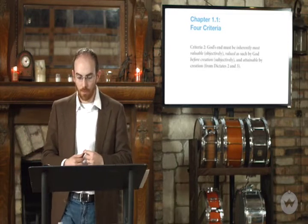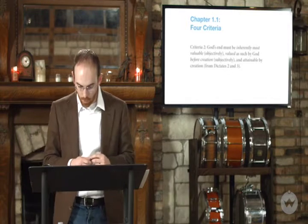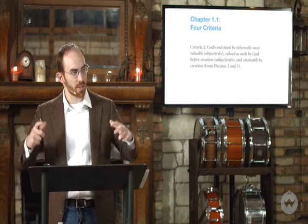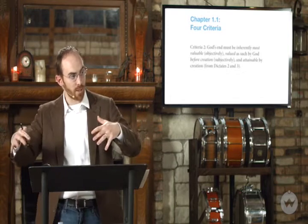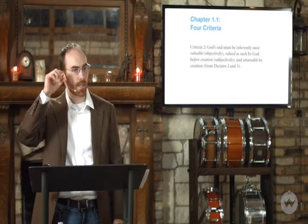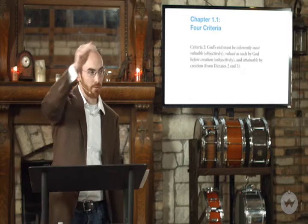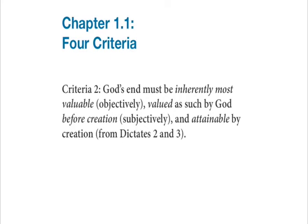Criterion number two is a little more complicated, and you'll hear those assumptions lurking in the background. God's end must be inherently most valuable — meaning objectively speaking it's the most valuable. It must be valued as such by God before creation, subjectively. And it must be attainable by creation.